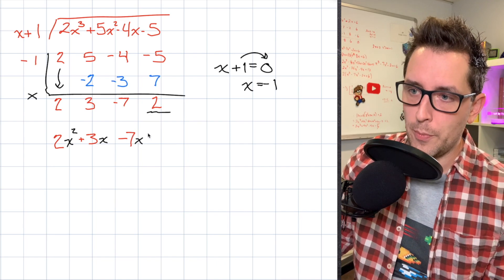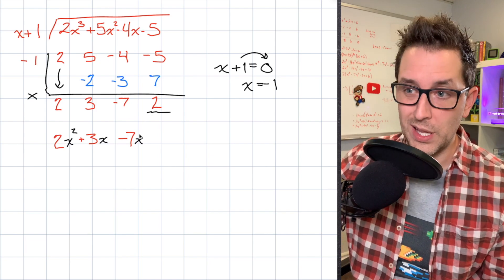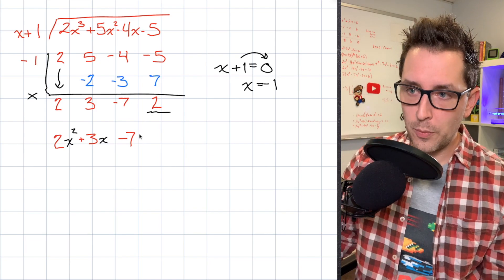And we could put an x to the power of 0 here, just to illustrate that we're decreasing by 1 each time here. But I'm not going to do that because I want to keep things nice and clean. Alright, so that's going to be my quotient.